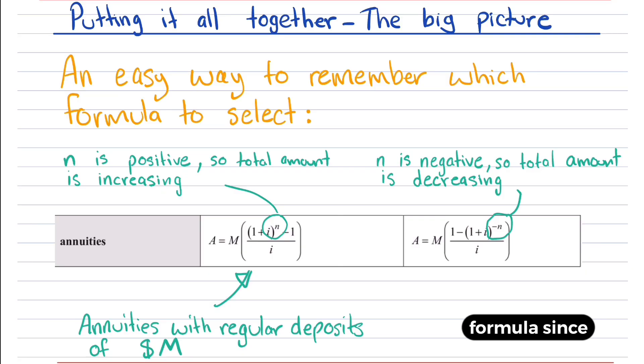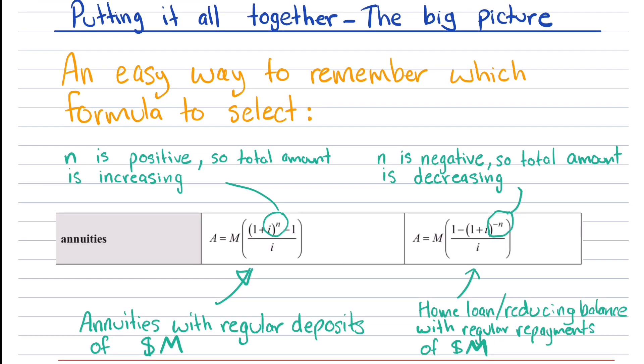And then for the second formula, since there's a negative in front of the N, that means the total amount is going down. So the second formula here is linked to reducing balance loans, where instead of using capital R as the repayment amount, M is actually the repayment amount.